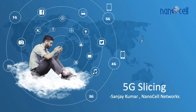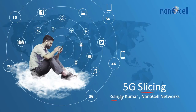Hi. 5G supports multiple service verticals which are very different in terms of expectations from network resources. To support these different service verticals, we need to logically divide our network, which is actually implemented over a single physical network. The answer is 5G slicing. In this session we are going to talk about 5G slicing. My name is Sanjay Kumar and I am from NanoCell Networks.